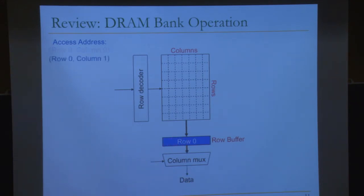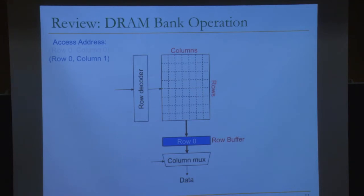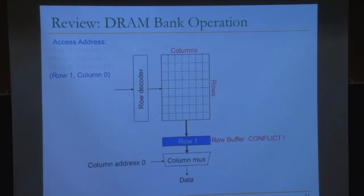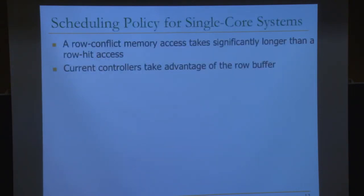If the next access is the same row, you get a row buffer hit — you don't need to activate the row because it's already in the row buffer. The memory controller only needs to send the column address. This is much faster than a row buffer miss. If you need to access another row, the memory controller must first pre-charge the array, then activate the new row, then send the column address. A row conflict access takes two to three times longer than a row hit.